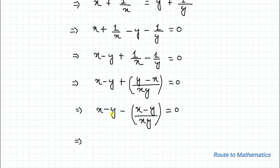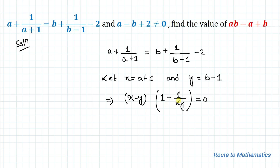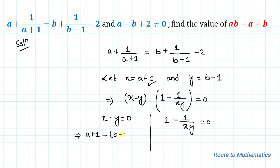Next step: let's take x − y common. So we have (x − y) × (1 − 1/(xy)) = 0. From here we can write x − y = 0, or 1 − 1/(xy) = 0. The first case x − y = 0 implies a + 1 − (b − 1) = 0, which gives a − b + 2 = 0.